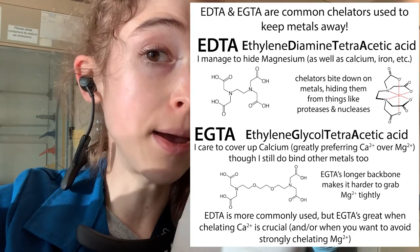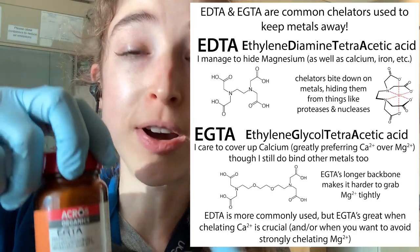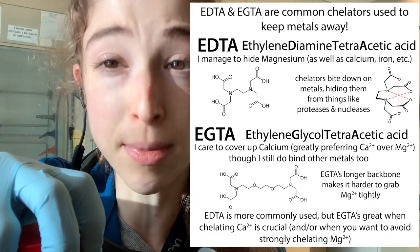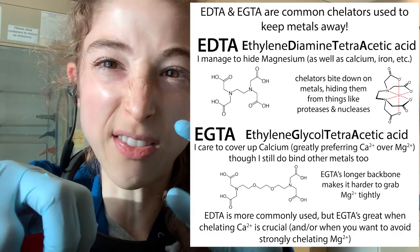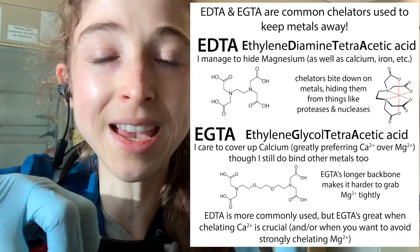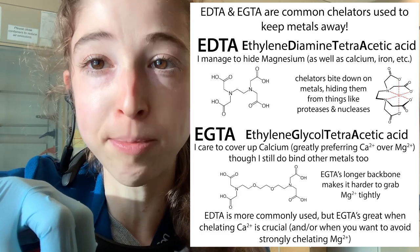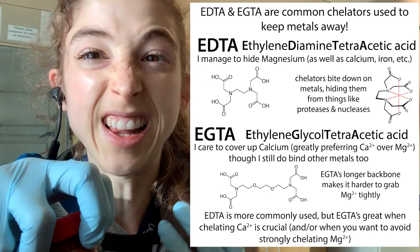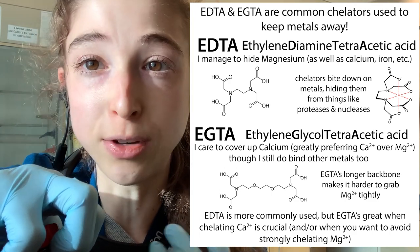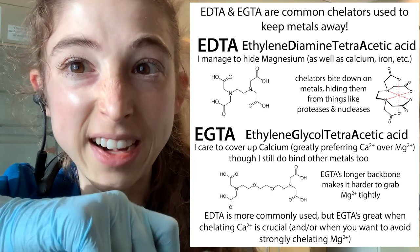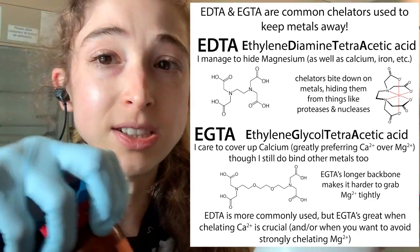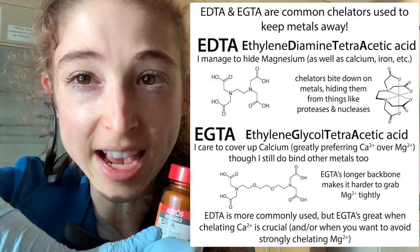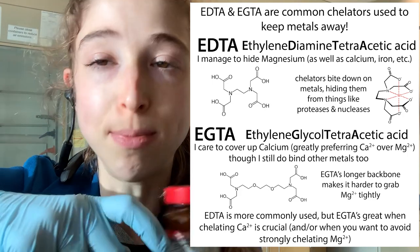We use EDTA more commonly. EGTA, however, has a higher preference for calcium — a much higher preference for calcium than it has for magnesium. This can be really helpful in situations where you have physiological-type conditions, where there's a big excess of magnesium over calcium. So if you were to use something with a lower selectivity for the calcium, then you would have to add a lot of it in order to get those little calcium ions hiding out in the big sea of magnesium.